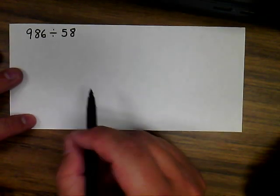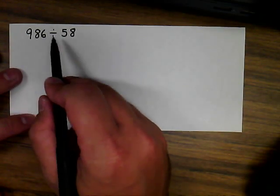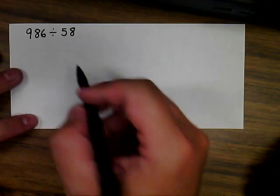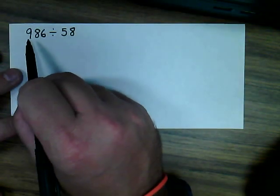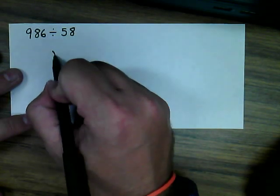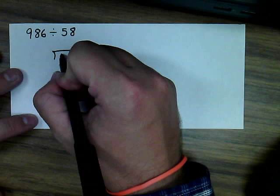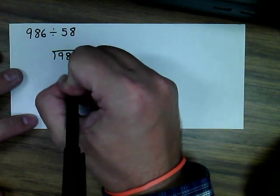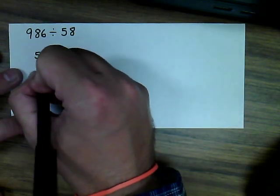This video is going to demonstrate how to divide a three-digit dividend by a two-digit divisor. Now, to divide a problem, you need to know the terms. This is your dividend divided by your divisor, but when you write in a bracket, the dividend goes inside the bracket, and the divisor is on the outside.